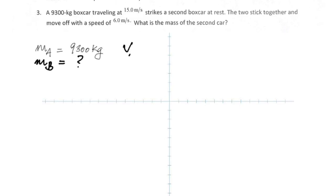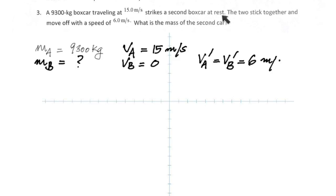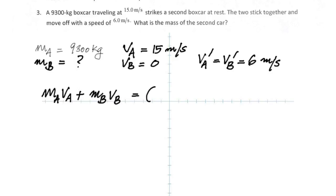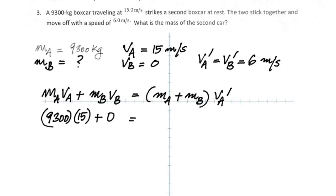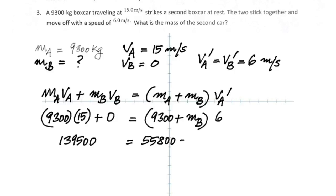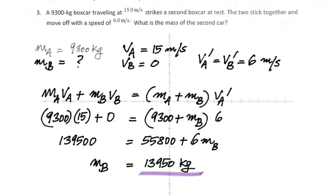Once again, in this question both of them stick together. These are the given quantities; the velocity of the second box car is zero because it was at rest. They have the same final velocity. When you substitute into the conservation of momentum equation and calculate, you are looking for the mass of the second box car. Rearranging, you get the mass as 13,950 kilograms.